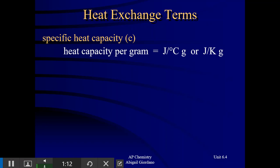Specific heat capacity is the amount of heat one gram of a substance must absorb in order to change its temperature by one degree. If you imagine — if any of you have a swimming pool in your backyard — how much heat is required to change the temperature of your swimming pool by one degree? Some materials require a lot of heat to change the temperature; some don't require much heat at all. Every substance has its own unique specific heat capacity.